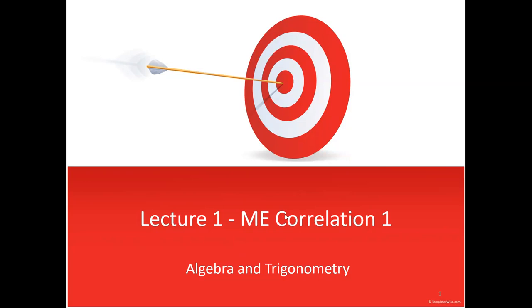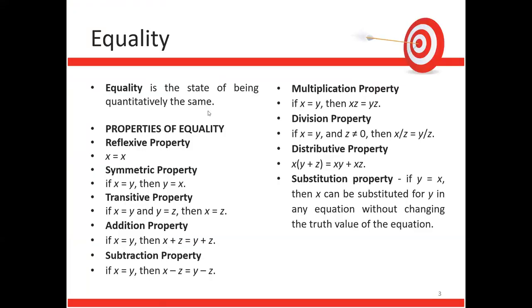This subject is for Correlation or ME — Mechanical Engineering Review. Lecture one is for Algebra and Trigonometry. We start with equality, which is the state of being quantitatively the same. It always has an equal sign.